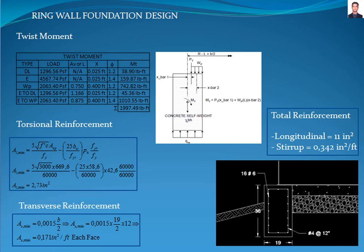Finally, according to Appendix NXB of the API 650 standard sections B4.2.3, we calculate the transverse reinforcement required for temperature and shrinkage with this equation, where B is the width of the foundation. The reinforcement to be placed is 11 square inches for longitudinal reinforcement and 0.342 square inches per foot for transverse reinforcement. We will use 16 No. 6 bars for longitudinal reinforcement and No. 4 stirrups at 12 inches for transverse reinforcement.